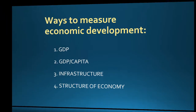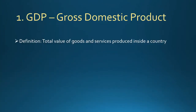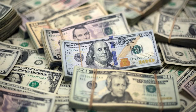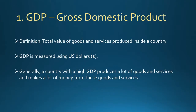Gross domestic product, or GDP, is defined as the total value of goods and services produced in a country in one year, and is measured using US dollars. One advantage of this is that it makes it easier to compare GDP scores of multiple countries without having to convert currencies first. The higher a country's GDP, the more goods and services a country produces, and the more valuable these products are.